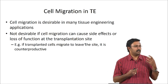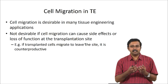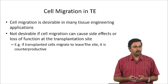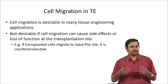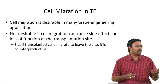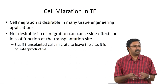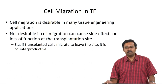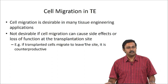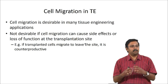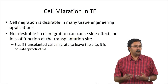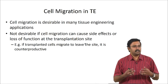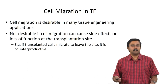However, it is not desirable if cell migration causes side effects such as loss of function at the transplantation site. Basically, if you have a cell-seeded scaffold and these cells are just going to migrate away, you would have a problem. You would want to ensure that cell migration is optimized. One way to minimize this loss of cells from a cell-seeded scaffold is to ensure they adhere properly — if they adhere more strongly to the scaffold compared to the surrounding environment, they will probably not migrate away. Optimizing the scaffold for cell adhesion can actually help in controlling cell migration.